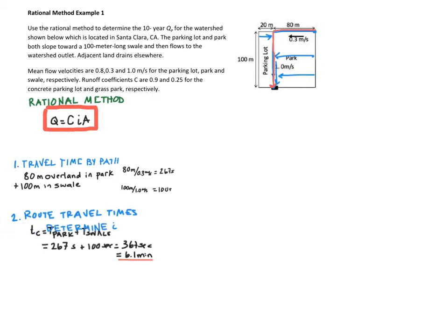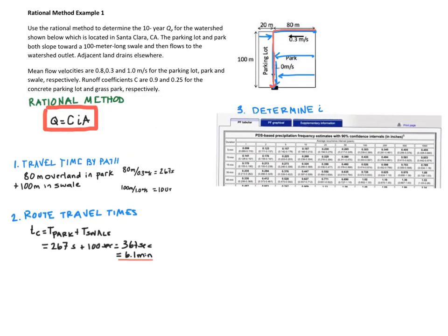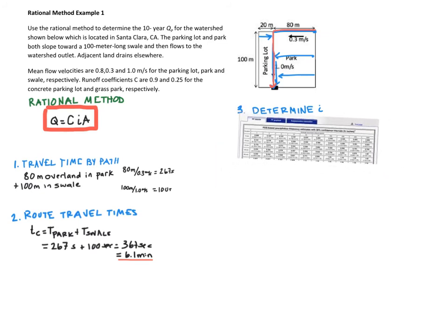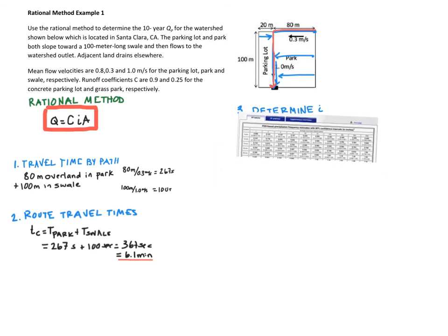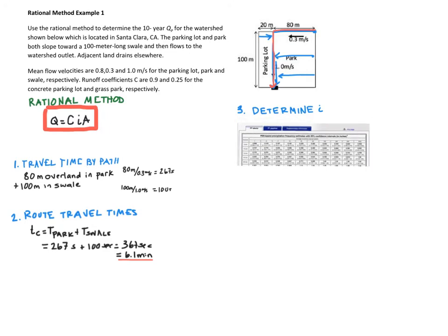Okay, so our next step, step three, is going to be to determine the intensity. So to determine the intensity, I went to the NOAA 14 atlas available on the web and looked at the table for Santa Clara. So here I replicate that table for you. The problem statement stated that this was going to be a 10-year peak flow, which means I want to use an intensity with a 10-year recurrence interval as well.